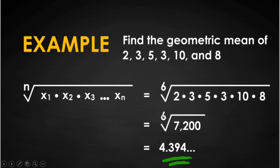So when you write 6th root of, when you multiply these numbers, you will get 7,200. Then, if 6th root of 7,200 is 4.394.